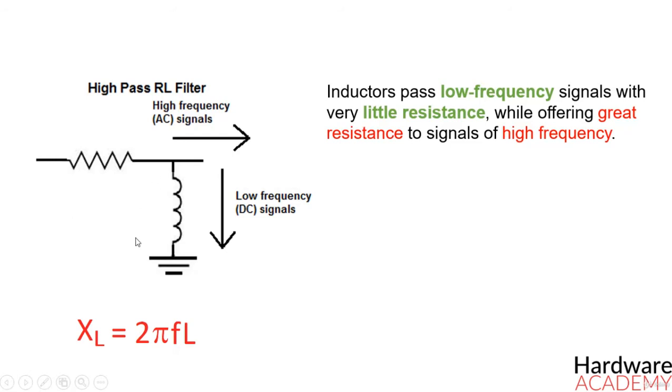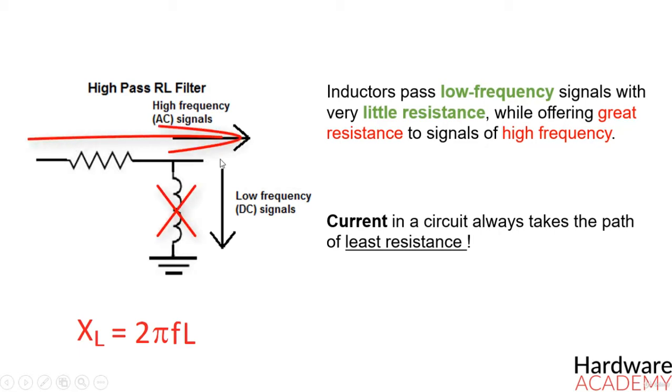Based on this principle, which is inductive reactance, is how this circuit operates. Remember that current in a circuit always takes the path of least resistance. Since inductors offer such a high resistance to high-frequency signals, current signals of high-frequency will not go through the inductor of this circuit. They will take an alternative path and go through another part of the circuit which offers lesser resistance.